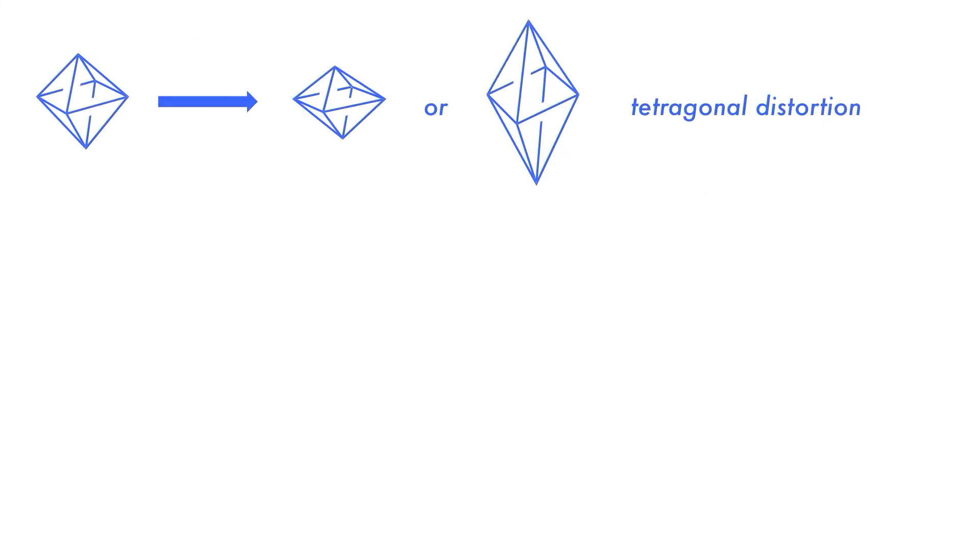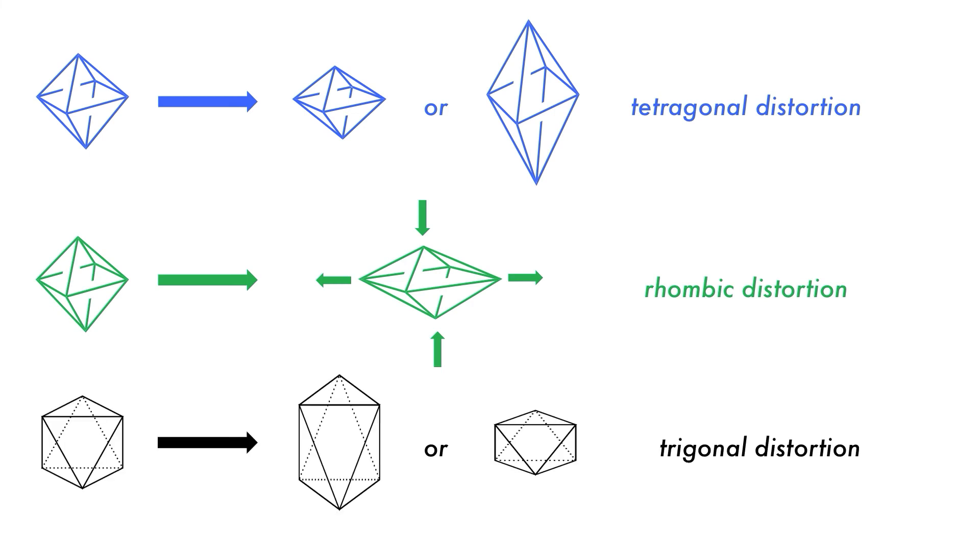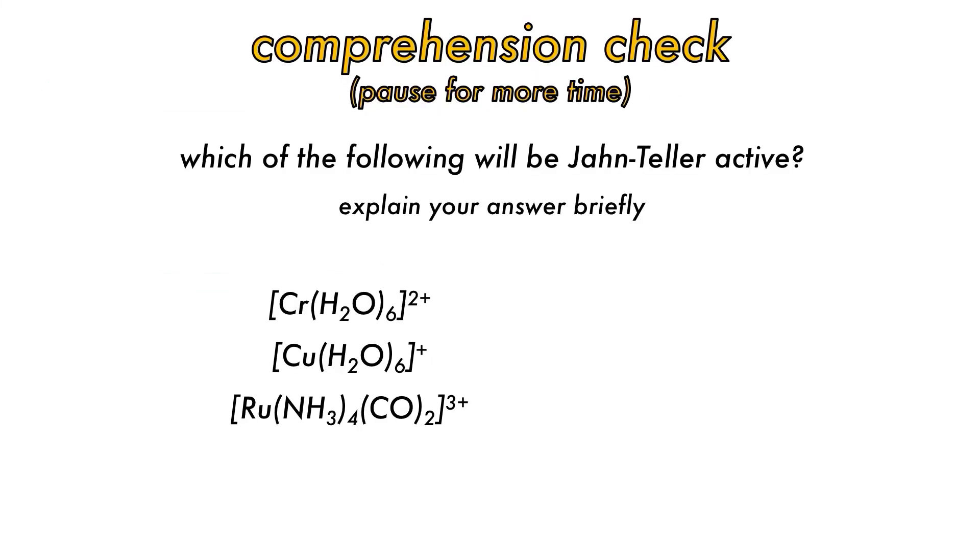The distortions considered so far have all been tetragonal, which occur along one fourfold axis only. Other distortions such as rhombic and trigonal along a threefold rotational axis or one of the faces also exist. Let's check comprehension.